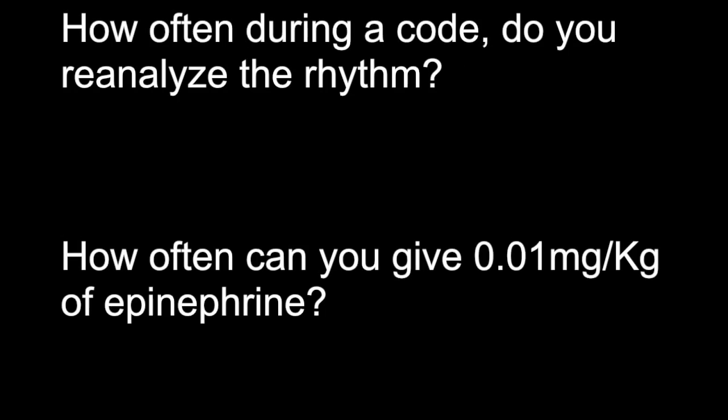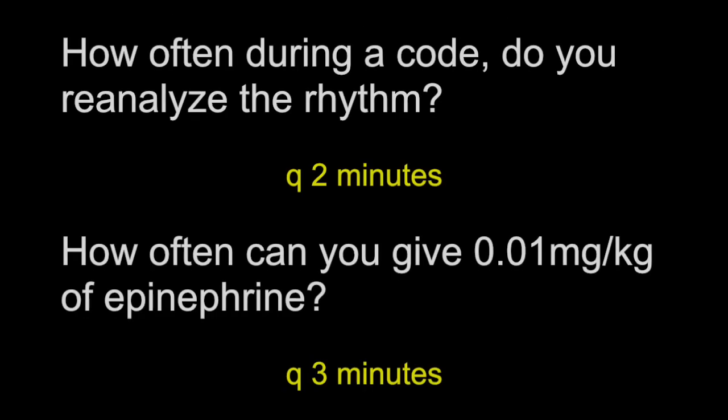How often during a code can you reanalyze the rhythm, and how often can you give 0.01 mg per kg of epi? You can reanalyze the rhythm every 2 minutes, and you can give epi every 3 minutes.